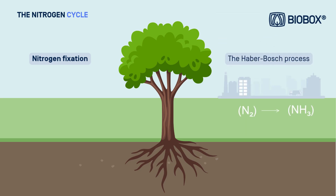Lastly, artificial fixation takes place through the Haber-Bosch process, developed to produce fertilizers on a large scale. In this process, nitrogen is converted into ammonia under high pressure and temperature conditions.